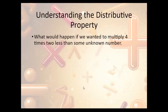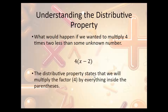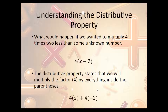The distributive property: what would happen if we wanted to multiply 4 times 2 less than some unknown number? So instead of just 4 times x, we want it to be 4 times some grouping — in this case x minus 2. So we write it as 4 times (x minus 2). The distributive property states that we multiply 4 by everything inside the parentheses. So this becomes 4 times x and 4 times negative 2, giving us 4x minus 8.